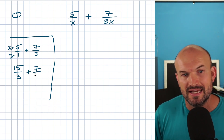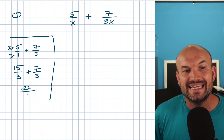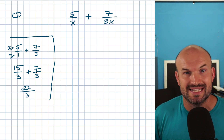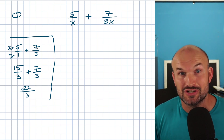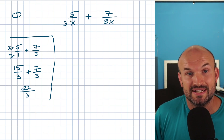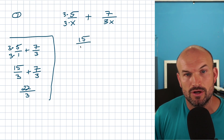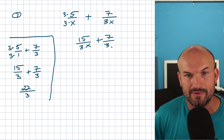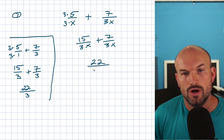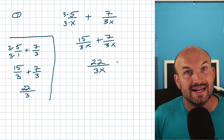Now we're dealing with X's rather than just numbers, but that's okay. We recognize that to get a common denominator, we multiply by three on the left-hand side — on the top as well as on the bottom — to produce an equivalent fraction. So now we have 15 over 3X plus seven over 3X. Now we have a common denominator and can apply the operation to the numerators, giving us 22 over 3X. This is as simplified as we can get.